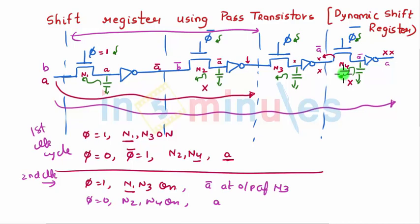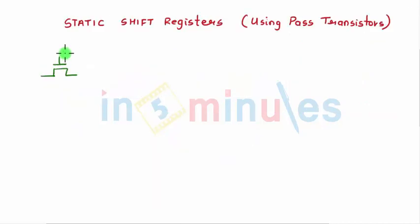Let's quickly go ahead and make a static one. We know that we need to just connect inverters in the feedback loop and then it becomes static. We have already seen that for D flip-flop as well. Let's quickly go ahead and make it.